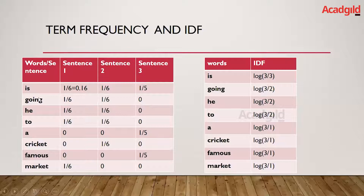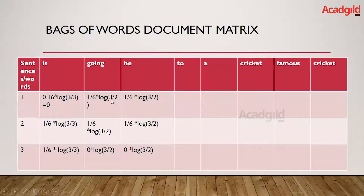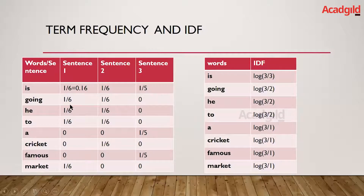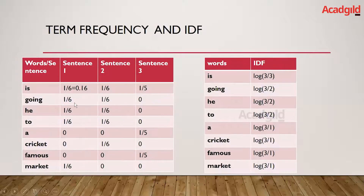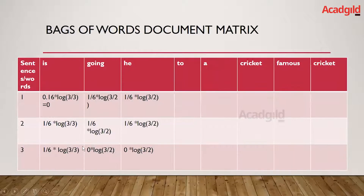For 'going' in sentence one, the TF is 1/6 and the IDF is log(3/2), giving 1/6 × log(3/2). For 'he' in sentence one, TF is also 1/6 and IDF is log(3/2). I have left some spaces empty for you to calculate. Moving to sentence two, the TF of 'is' is 1/6 and its IDF is log(3/3). The IDF values remain constant — only the term frequency changes per sentence. So for sentence two: 1/6 × log(3/3), 1/6 × log(3/2), 1/6 × log(3/2).